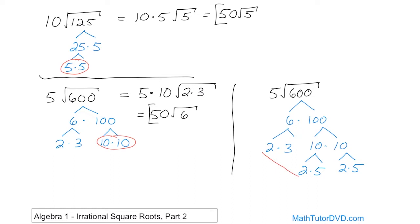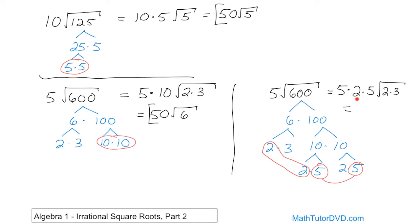Now I look for pairs. I see a pair of 2s and a pair of 5s. Everything at the bottom of the tree is effectively multiplied by each other — it's a multiplication tree. The leftover unpaired numbers underneath the radical are 2 times 3, which equals 6. On the outside, 5 times 2 is 10, and 10 times 5 is 50 times the square root of 6. Same answer either way.